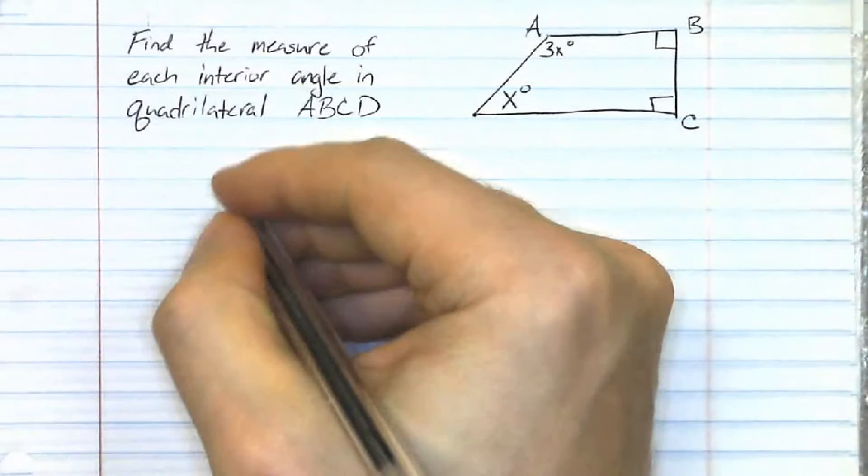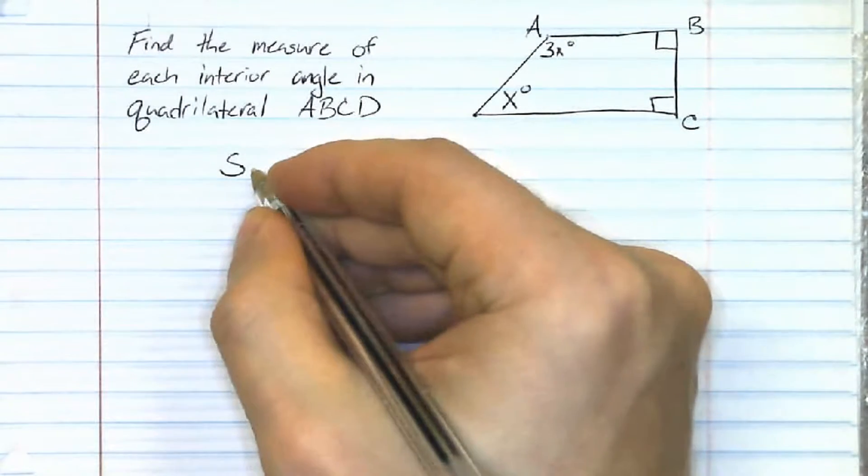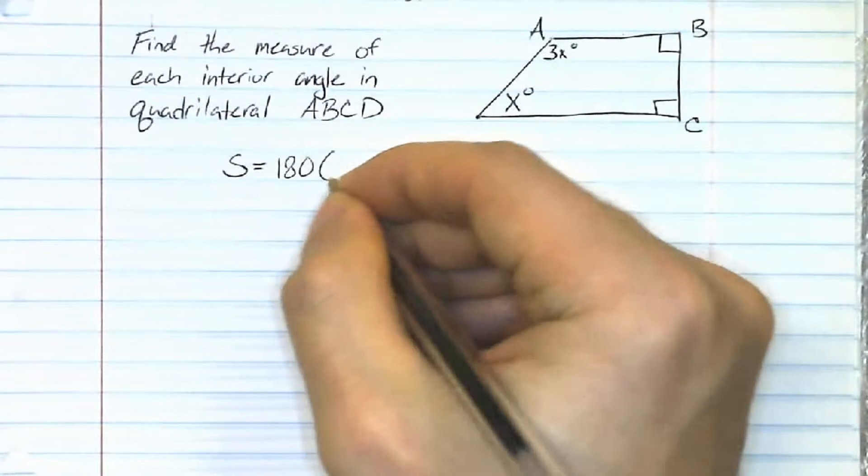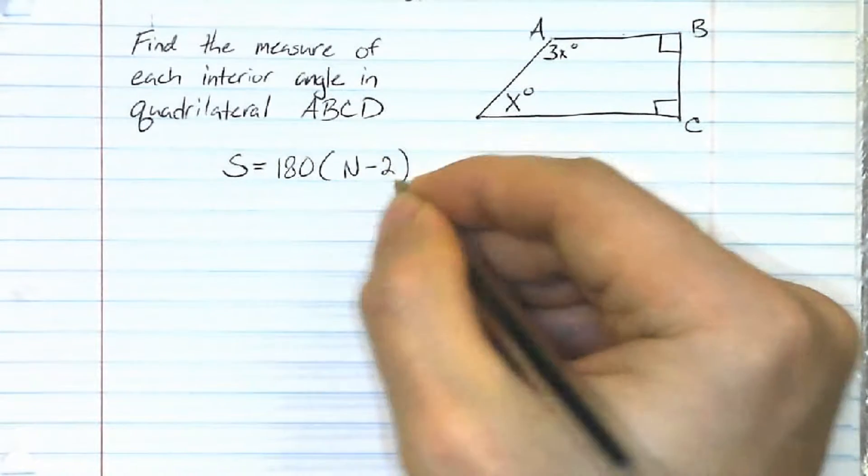One, two, three, four. So we're going to take our formula here. S equals 180 times n minus 2.